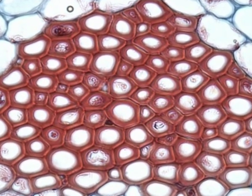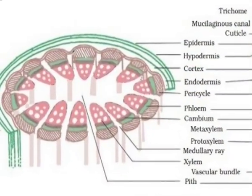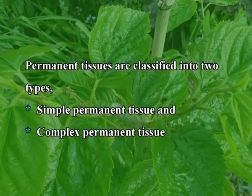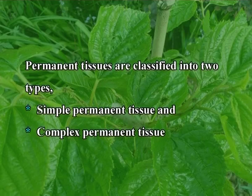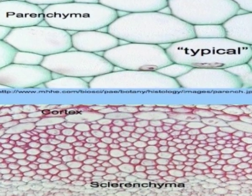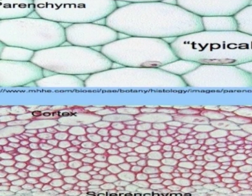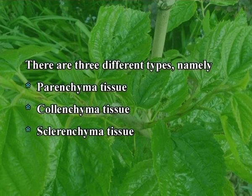Permanent tissues have attained the stage of maturity and they are derived from meristematic tissue. They have lost the capacity of cell division either temporarily or permanently. Cells of this tissue may be living or non-living. Permanent tissues are classified into two types: simple permanent tissue and complex permanent tissue. Simple permanent tissue consists of a homogenous mass of cells and has lost the capacity of cell division either permanently or temporarily. There are three different types: parenchymatous tissue, cholenchymatous tissue, and sclerenchymatous tissue.